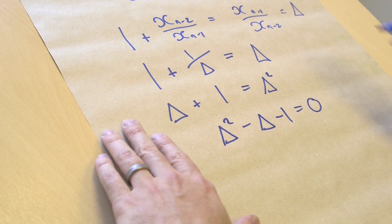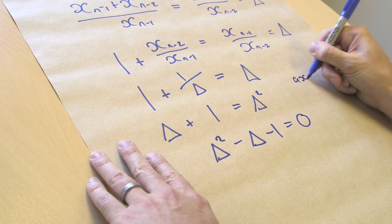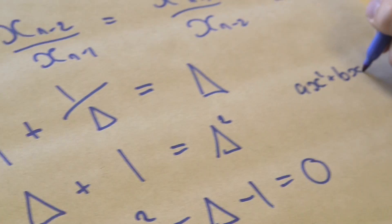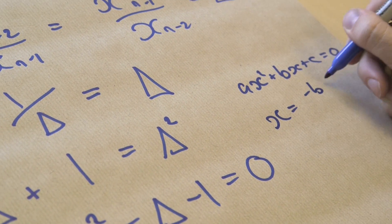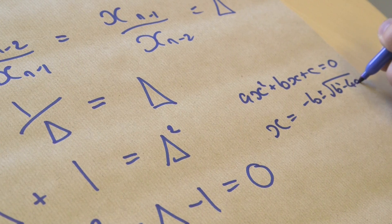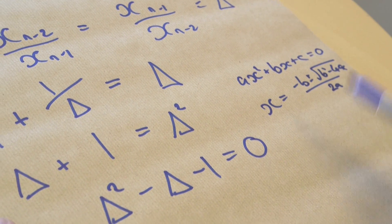Now we can solve this using our friend, the quadratic equation. Because we know that if you have a times x squared plus bx plus c equals 0, then x equals negative b plus or minus the square root of b squared minus 4ac over 2a. So we can substitute in to use the quadratic formula.